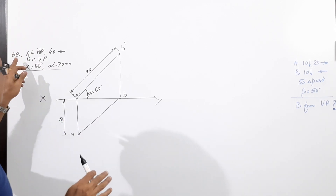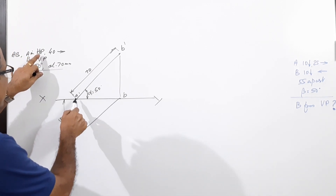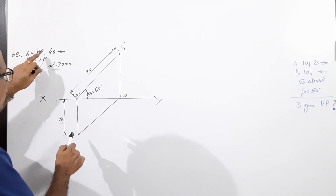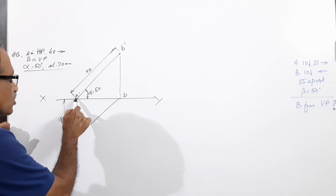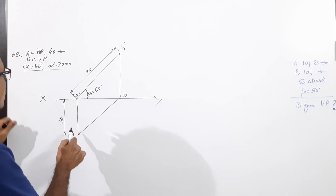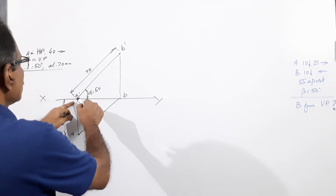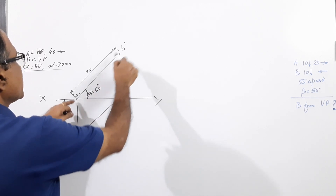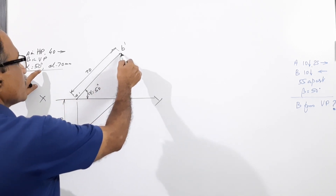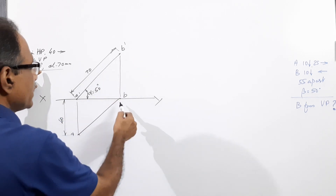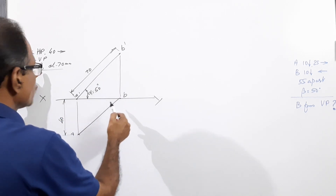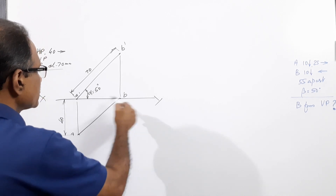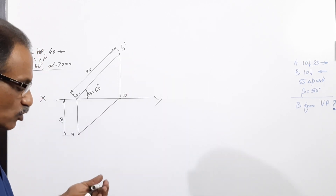A is in HP so A-dash is on XY; 40mm in front of VP means A is 40mm below XY. At A-dash draw a 50-degree line and measure 70mm to locate B-dash. Drop it down to XY — B is on XY because B is on VP. AB is the plan, A-dash B-dash is the elevation. That's the solution.